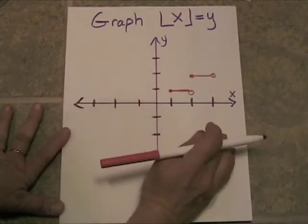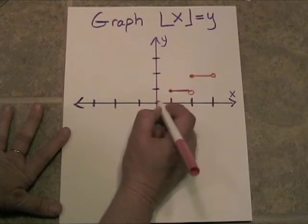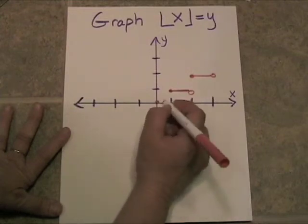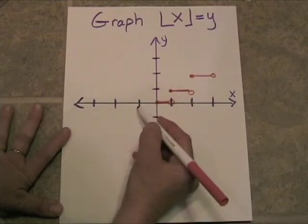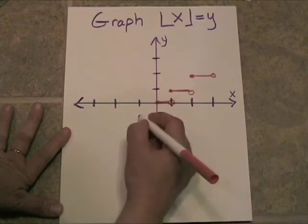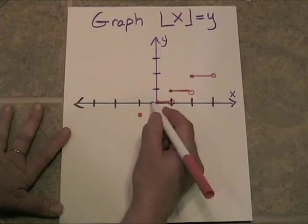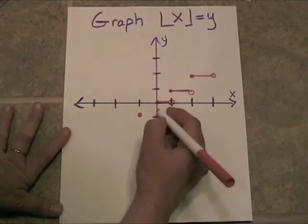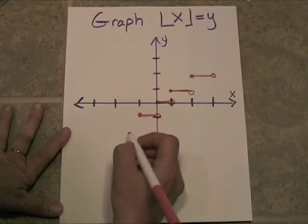Now let's see what happens on the other side of the graph. At 0, the greatest integer of 0 would be 0, and any values in between would also go down to 0, except for 1. In negative territory, the greatest integer of negative 1 would be negative 1 — solid dot there. Values like negative ½ or negative 0.7 would go down to negative 1. Negative 0.1 would also go down, but 0 itself goes to 0. So we're seeing the exact same pattern on this side as well.